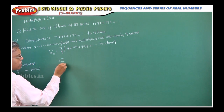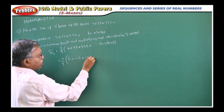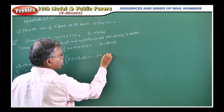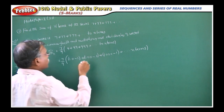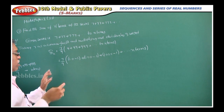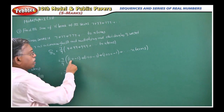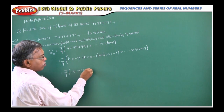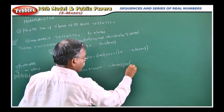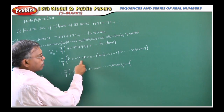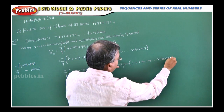Now, convert these in the form of powers of 10: 9 can be written as 10 minus 1, 99 as 100 minus 1, 999 as 1000 minus 1, and so on up to n terms. So the expression becomes 7 by 9 into (10 plus 100 plus 1000 plus dot dot dot, n terms) minus (1 plus 1 plus 1 plus dot dot dot, n terms).